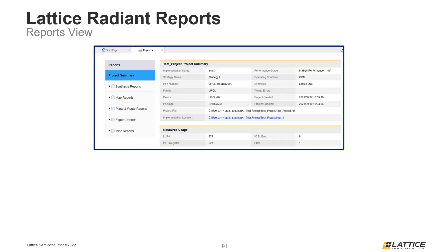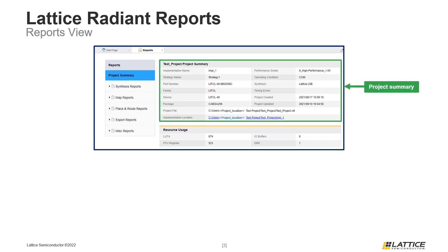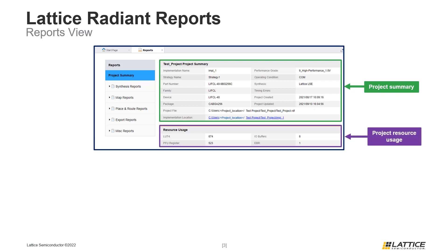Once the Reports View opens, users should see something similar to the figure on the slide. The Reports View window contains several sections. On the right side of the window are the Project Summary and Project Resource Usage sections. Depending on the active report, the content in this area will change.